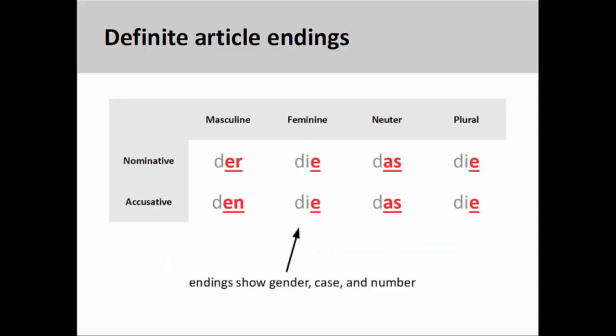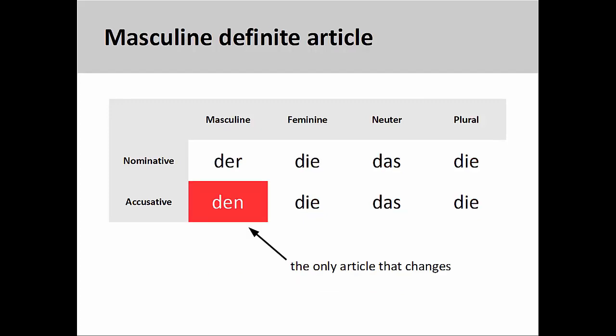You'll recall from the presentation on definite articles that the endings of these articles show the gender, case, and number of the noun they modify. You will also recall that the masculine definite article was the only one that changed as it moved from the nominative to the accusative case. These patterns, with a few minor exceptions, can also be found in the indefinite articles.